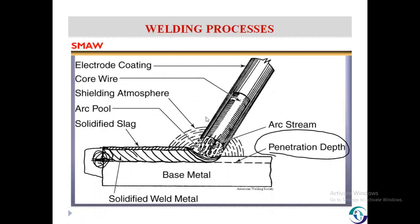In Submerged Arc Welding, the arc is produced between the base metal and the covered electrode. In this process, the shielding is provided by the electrode itself, and the filler is also provided by the electrode itself. The base metal is negatively charged and the electrode is positively charged for the DC source. It may be used with AC, but normally we use DC power source, so the polarity for the DC power source will be reverse polarity for this process.